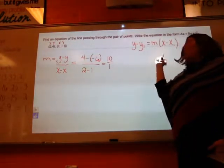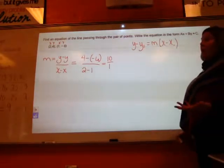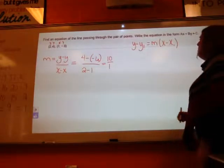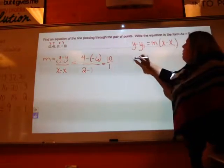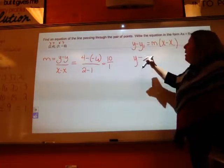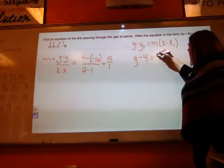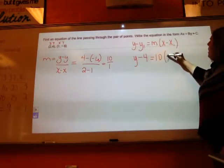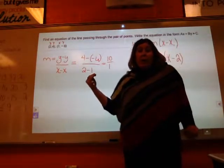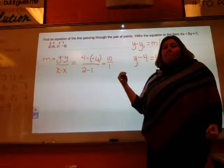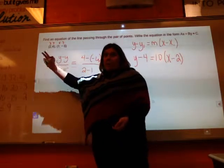So it doesn't really matter which ordered pair I pick. Most of us are probably going to pick 2 and 4 because it's got positive numbers in it. But you've got to make sure you find your slope right, because if you don't find your slope, the rest of it's going to be wrong. So I'm going to use 2 and 4, and so y minus 4 is going to be equal to m, which in this case is 10, and then times the quantity x minus 2, because I used the point 2, 4 that was given to me.